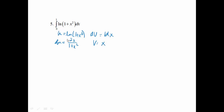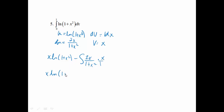Using integration by parts, I'll have uv, so x·ln(1 + x²), minus the integral of v·du. So I'll have x·ln(1 + x²) minus the integral of 2x² over (1 + x²) dx.